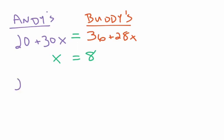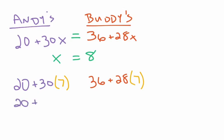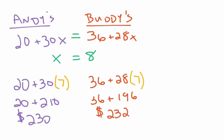What we have to do is we have to go back to the expressions, and we have 20 plus 30, but instead of x, we're going to use 7. And then for Buddy's, we're going to say 36 plus 28 times 7. And whichever number is smaller, that's going to be the cheaper place to rent our vehicles from. So for a 7-day rental at Andy's, we have 20 plus 30 times 7 is going to be 210. So for a total of 7 days, it's going to be $230. But if we rent from Buddy's, it'll be 36 plus 196, and when we add those together, we get 232. So if we're going to rent the vehicle for 7 days or less, Andy is going to have the better deal for us.